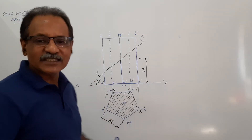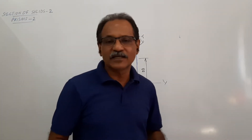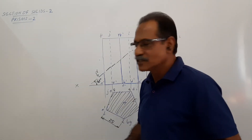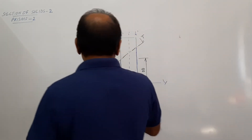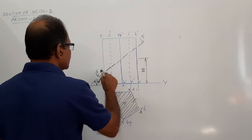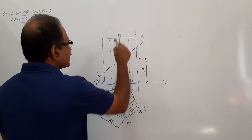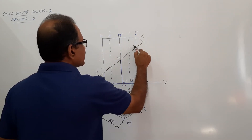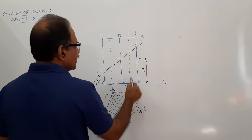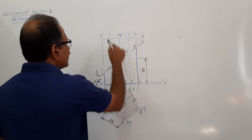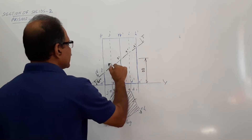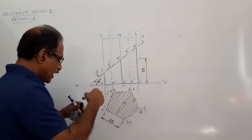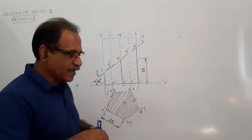Now, how many vertical edges does the cutting plane cut? The cutting plane cuts all 5 vertical edges: A-dash and F-dash at 1-dash, B-dash and D-dash at 2-dash, C-dash and H-dash at 3-dash, D-dash and I-dash at 4-dash, and E-dash and J-dash at 5-dash. I have marked the points in order.